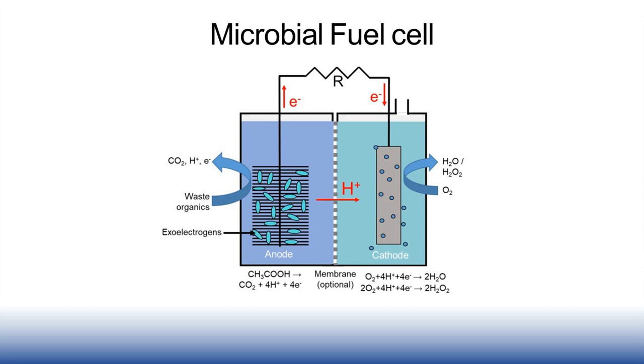Electrons flow from the anode to the cathode through an external electrical connection that typically includes a resistor, a battery to be charged, or some other electrical device. The anode and cathode are often separated by a semi-permeable membrane.